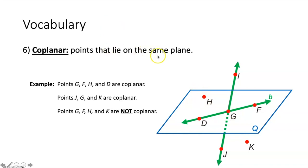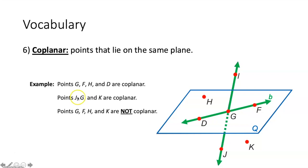Coplanar means points that lie on the same plane. Points G, F, H, and D would be coplanar — they all lie on plane Q. Points J, G, and K are coplanar: just like you can draw a line through any two points, you can draw a plane through any three points. So any three points will be coplanar. Points G, F, H, and K are not coplanar because G, F, and H are on the same plane but K is not.